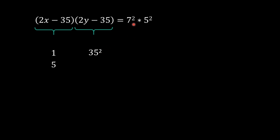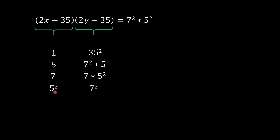If the first factor is 5, the second is 7 squared times 5 (since one factor of 5 is taken). The next possible value is 7, giving the second factor as 7 times 5 squared. Then we can have 5 squared as the first factor, leaving 7 as the second. Next is 5 times 7, with the other factor also being 7 times 5. Note that (2x minus 35) and (2y minus 35) are symmetrical, so cases like 7 squared times 5 paired with 5 are mirrors of earlier ones — we stop the enumeration here.